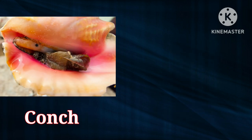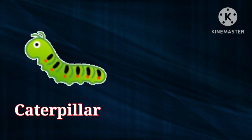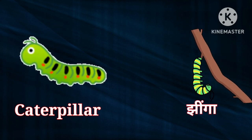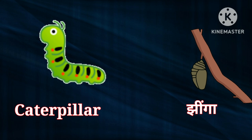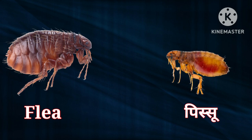Conch — yani Shankh. Ek baar mere saath boliye: Conch. Flea — yani Pissu. Ek baar mere saath bolo: Flea.